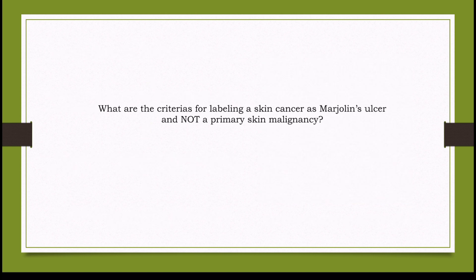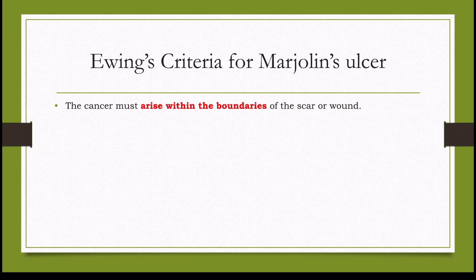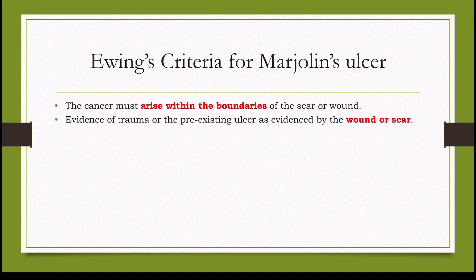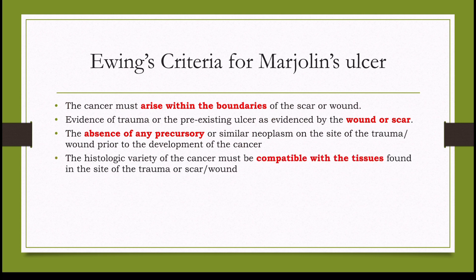What are the criteria for labeling a skin cancer as Marjolin's ulcer and not a primary skin malignancy? Ewing formulated a set of criteria to establish the relationship between trauma and cancer development. The cancer must arise within the boundaries of the scar or wound, with evidence of trauma or pre-existing ulcer as evidenced by the wound or scar, and the absence of any precursory or similar neoplasm at the site of trauma prior to cancer development.